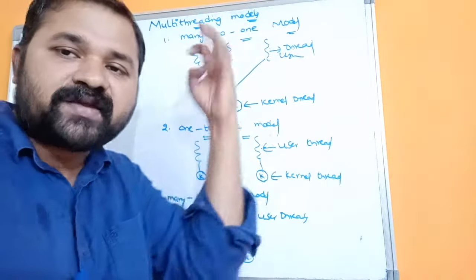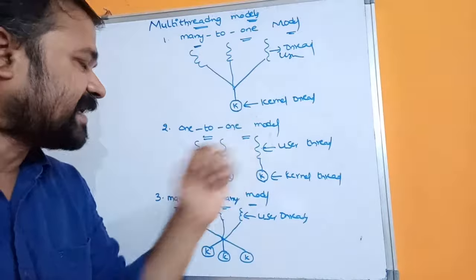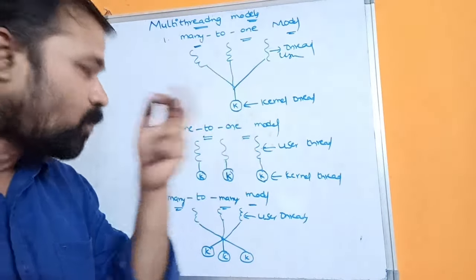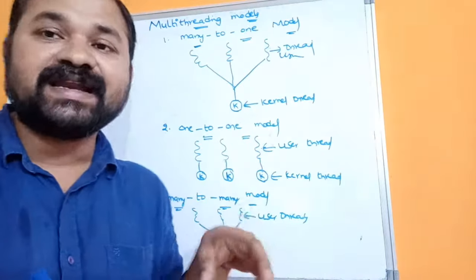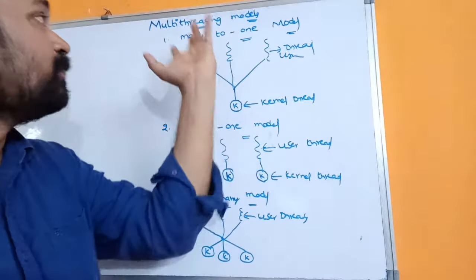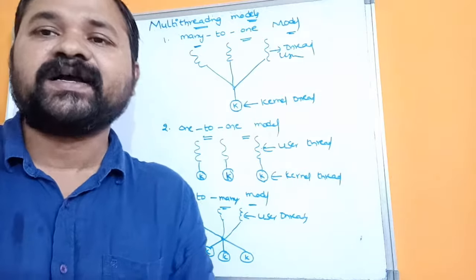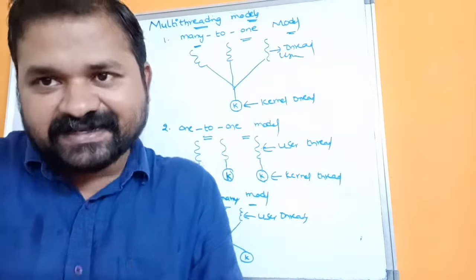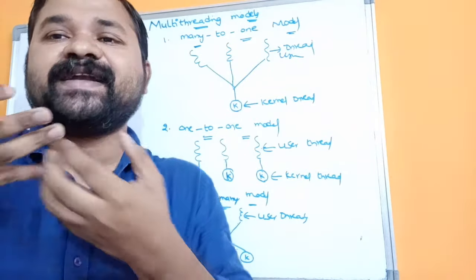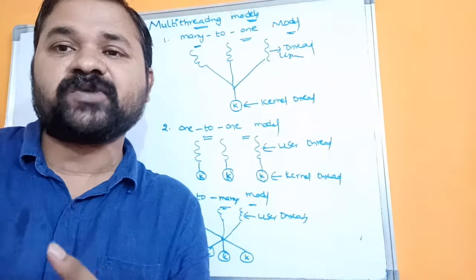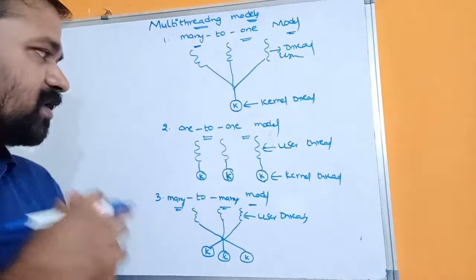In order to overcome this limitation, we use the second approach: the one-to-one model. The one-to-one model solves the limitation of the many-to-one model. The limitation of many-to-one is that it doesn't implement multi-processor architecture, so it doesn't implement parallelism or concurrency.